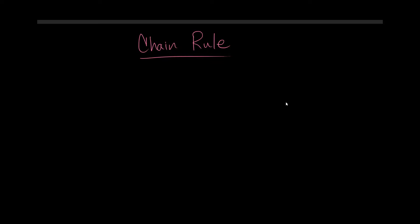Hey everyone, how's it going? In this video, we're going to work through an example of solving the derivative of a function using the chain and product rules. The question asked is: how do you find the derivative of y equals x squared sine of the square root of x?